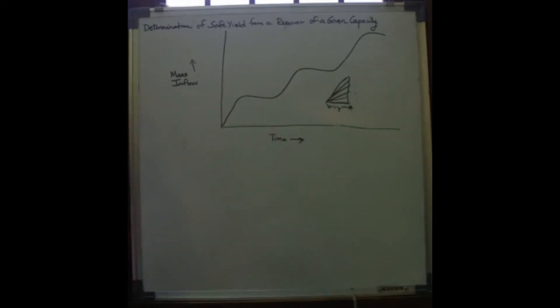The second step: from the apex points A1, A2, A3 of the mass inflow curve, draw tangents in such a way that their maximum departure from the mass inflow curve does not exceed the specified reservoir capacity.